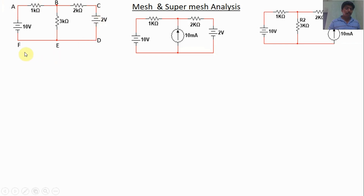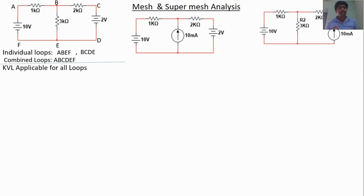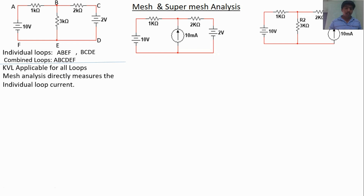Let's discuss the first type. Consider points A, B, C, D, E, F. The individual loops are ABEF (loop 1) and BCDE (loop 2). The combined loop goes A to B, B to C, C to D, D to E, E to F. KVL is applicable for all loops — individual as well as combined.